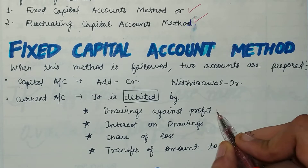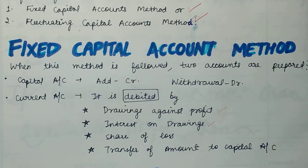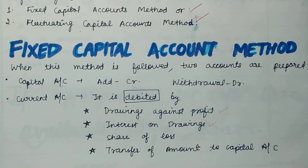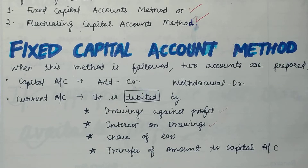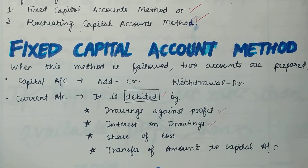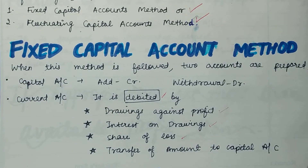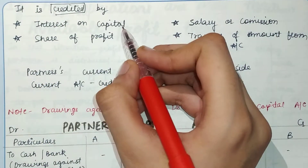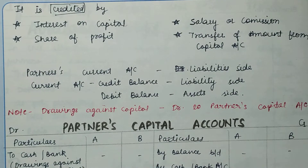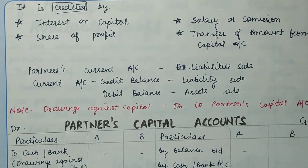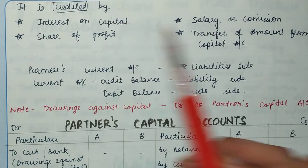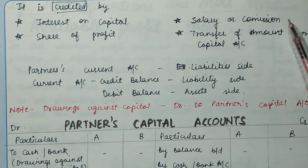In the current account: drawings against profit and interest on drawings are debited. When a partner withdraws for personal use, we call it drawings, and the firm charges interest on drawings — both are debited. On the credit side: interest on capital, share of profit, salary, and commission are credited. Share of loss is debited. So the current account carries all the routine transactions of the partner.